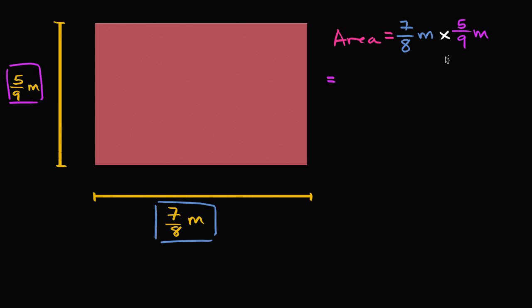Well, that's just going to be equal to the meters times the meters give us square meters. So meters squared. We could write it like that. And then we're going to have 7 times 5 in the numerator to get us 35. And then in the denominator, we are going to have 8 times 9 to give us 72. And we'd be done. This is the area of this rectangle here. It's 35 72nds of a square meter.